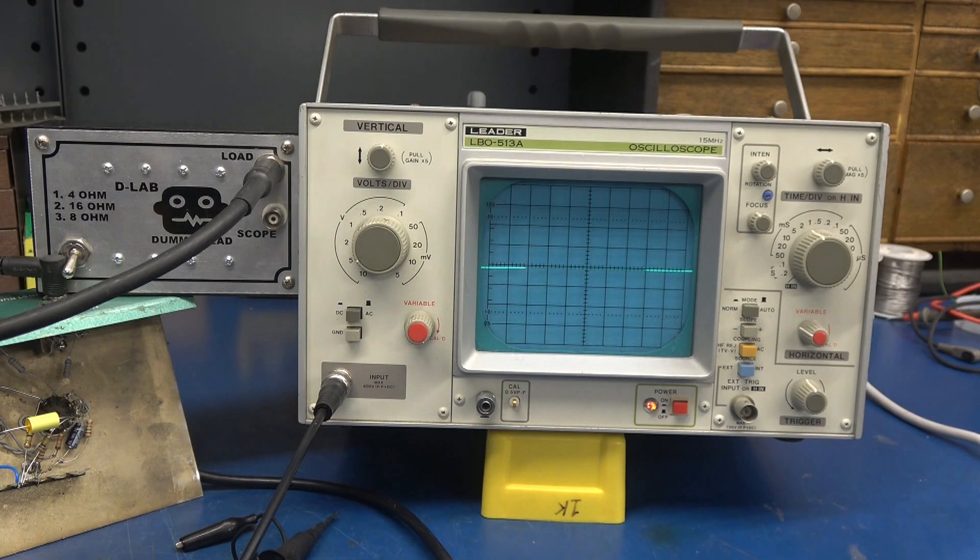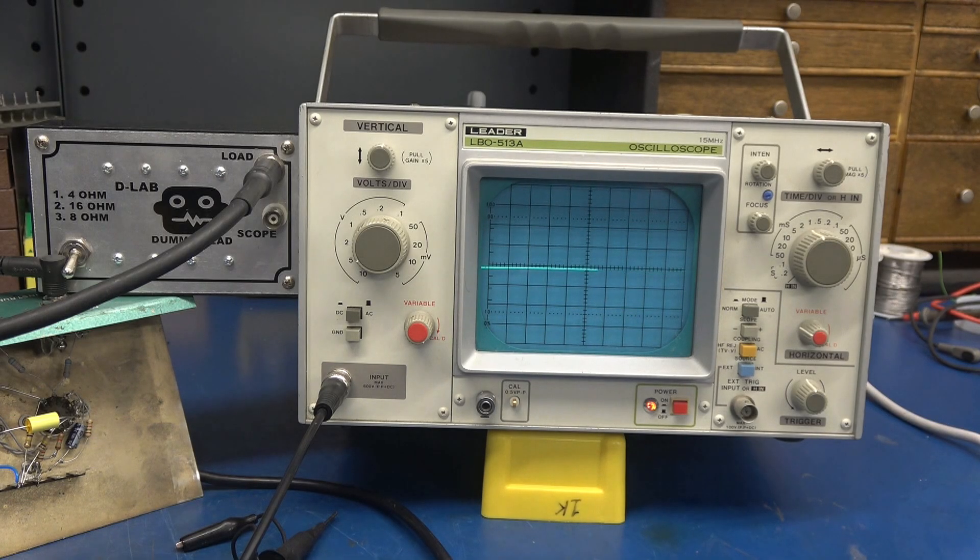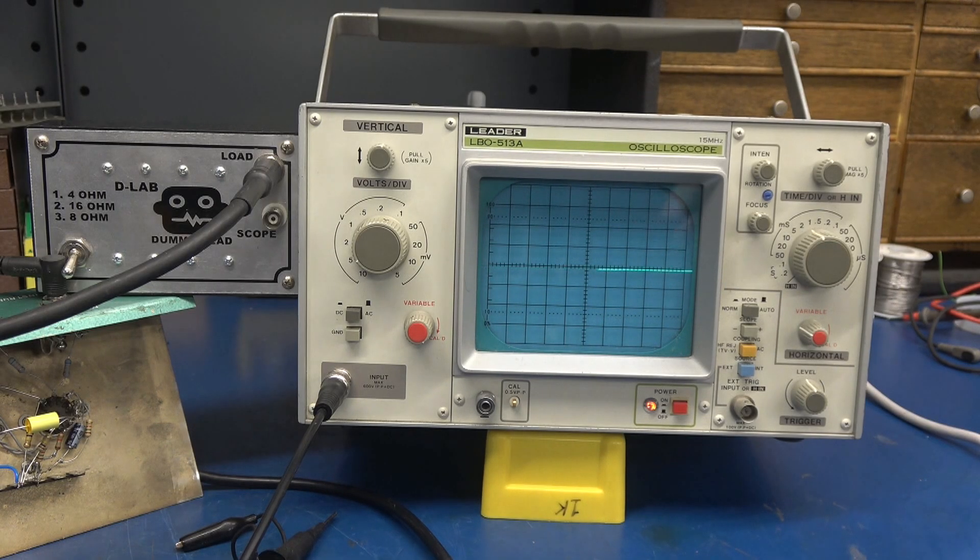You don't need to be an expert to use a scope. You'll find that it is the most valuable instrument on the bench. You don't need an expensive scope for audio work. In this case, I have a 15 megahertz scope, but you can find these cheap online. I recommend Leaders, B&K, Iwatsu, Tektronix, and gold stars. Heathkit scopes are okay, but ensure that they were factory built.